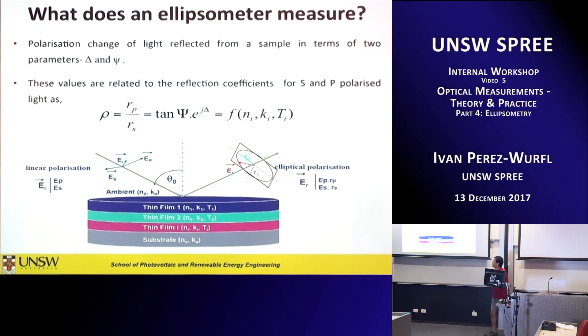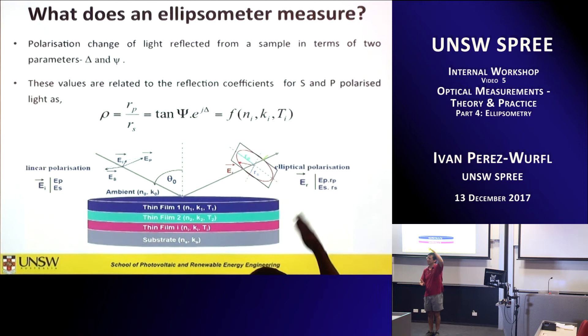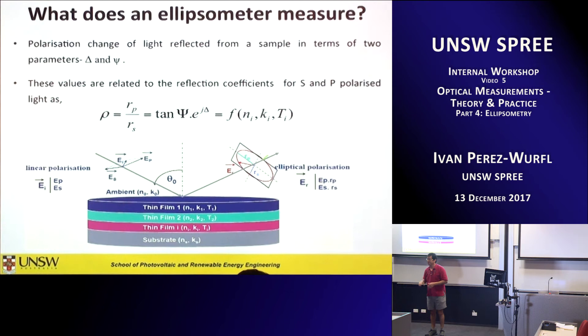When you look at the ellipsometry equation, you realize the power of it in terms of stability and reliability — it's a ratio. So if you have noise, the noise cancels out. If the intensity of the light fluctuates, unless S-polarization and P-polarization are changing at different rates — which isn't the case with an incandescent lamp source — everything cancels out. You don't need a double beam. You don't need to calibrate anything, because we're not measuring reflection; we're measuring the ratio and interpreting from there.